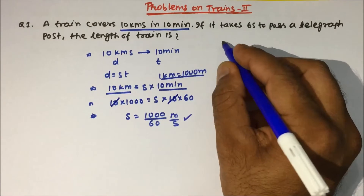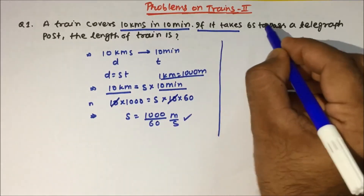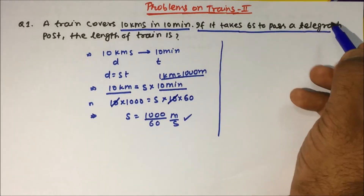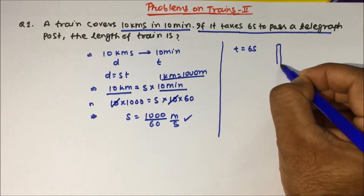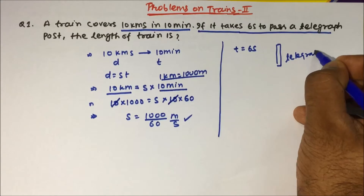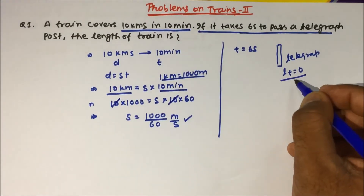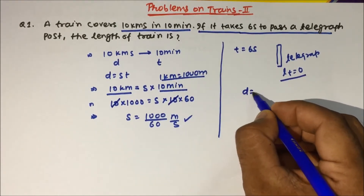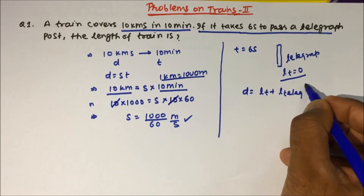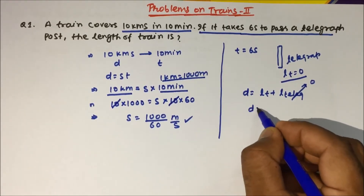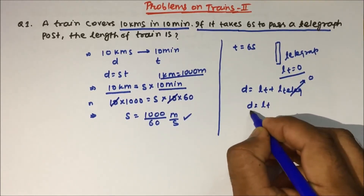Because we converted to meters per second. The next part of the question says the train takes 6 seconds to pass a telegraph post. So time = 6 seconds. Since we are passing a telegraph post, its length is considered 0 compared to the train. Therefore, the distance equals only the length of the train.